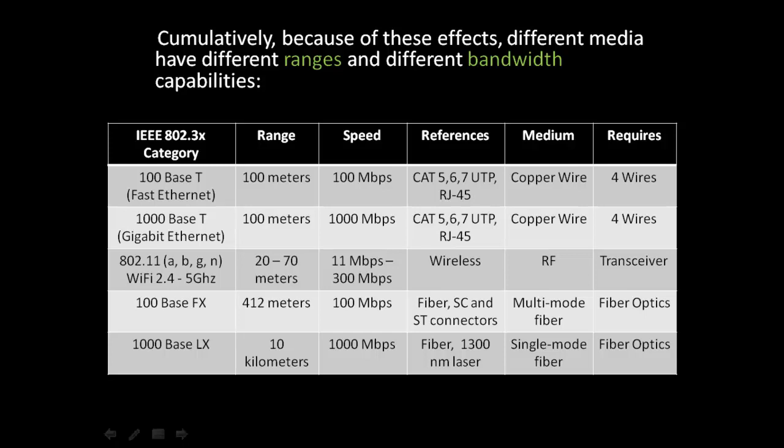Wi-Fi operates in a frequency range between 2.4 and 5 GHz. It has a range of between 20 and 70 meters depending on its frequency. It has a speed of between 11 megabits per second to 300 megabits per second, depending on whether it's A, B, G, or N. The medium is RF and it requires a transceiver.